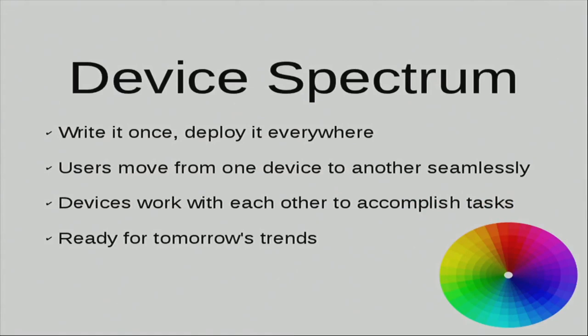One of our other driving philosophies is the concept of device spectrum. A laptop, a tablet, a smartphone, a TV, a set-top box — they are being used increasingly for the same things by people, and they kind of expect them to work together. If you ask average human beings what they expect their smartphone, tablet, or laptop to be able to do, they'll name basically the same things: mapping, following friends on Facebook, playing games. So with device spectrum, we want to achieve a situation where as much as possible, we can write it once and deploy it everywhere.